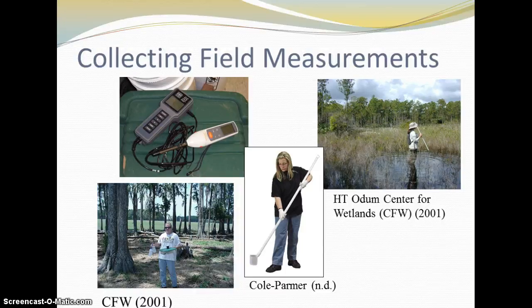Some newer or more expensive dissolved oxygen probes are optical and will not have a membrane to change monthly. For pH and conductivity, check the meter at least monthly for verification and make any changes to membranes, batteries, or recalibrations as needed. Make a habit of checking the condition of probes and the battery levels.